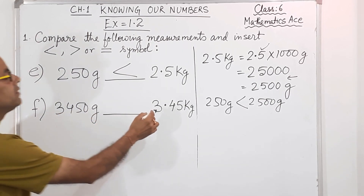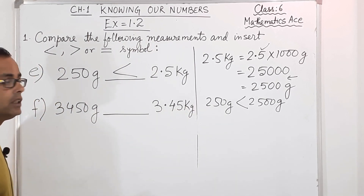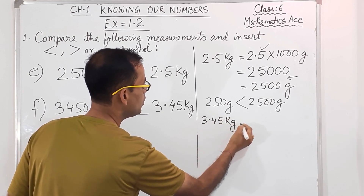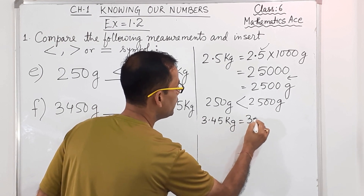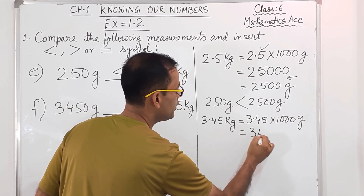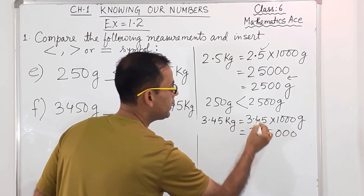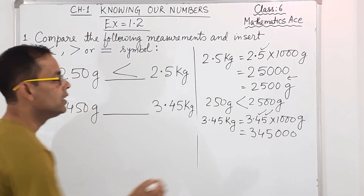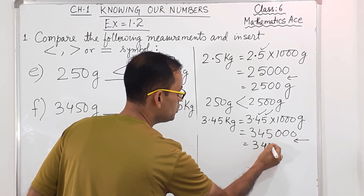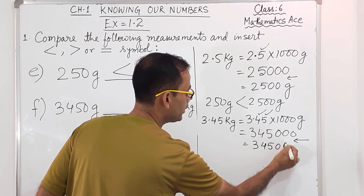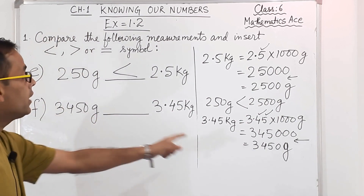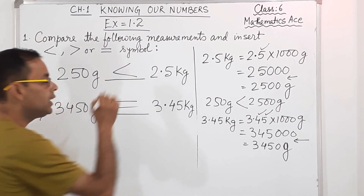Next question F: 2,450 gram versus 3.45 kg. So 3.45 kg converting to gram: 3.45 into 1,000 — we write 345 with three zeros but after the decimal point there are two digits, so the point moves two places giving 3,450 gram. So now 2,450 gram and 3,450 gram — wait, 3.45 into 1,000 is actually 3,450. So both come out to the same value — we put equal to sign.